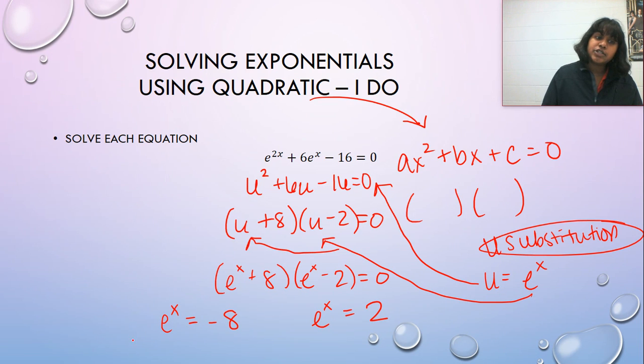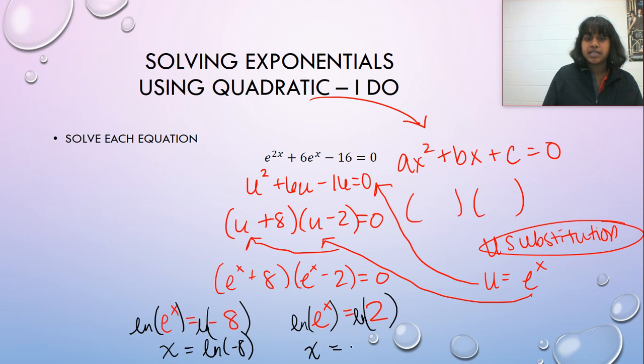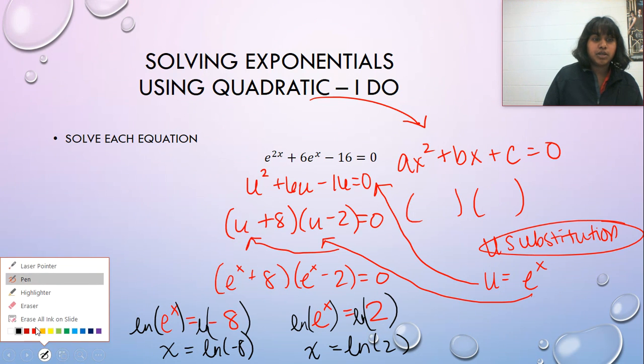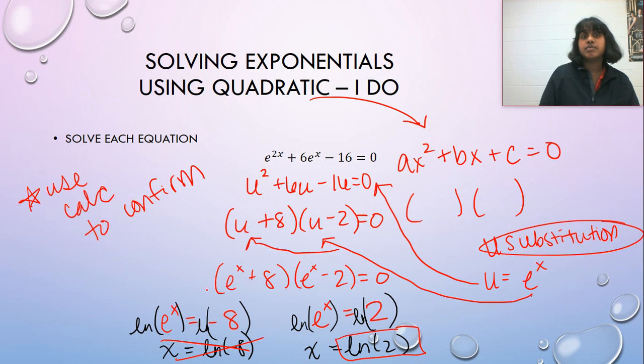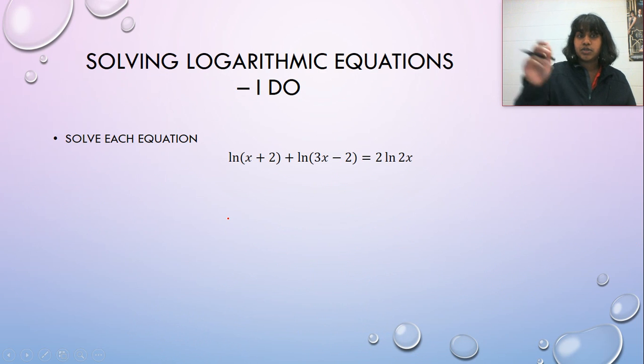And then I take the natural log of both sides. If I take the natural log of both sides, I can actually see something occurring. So on this side, this becomes X equals the natural log of negative eight, and this becomes X equals the natural log of two. But you should immediately know that the natural log of a negative number cannot be done. So my only answer is the natural log of two. Again, use a calculator to confirm. And you can use Desmos.com. Next question.